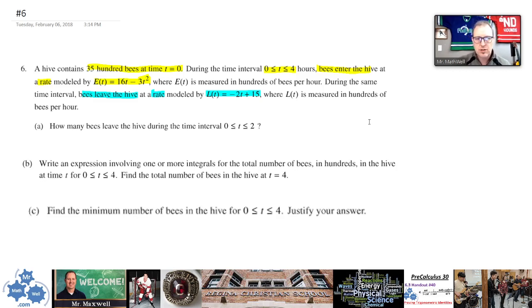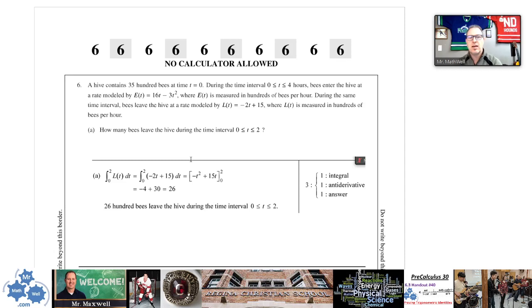Hopefully you've had a chance to give this question a try, and I did highlight some important things here at the beginning. The fact that we have 3,500 bees at the beginning, the time span is 0 to 4 hours. Bees enter the hive at this rate, so this is a rate, it's equivalent to a first derivative. Bees also leave the hive at this rate. Part A says how many bees leave the hive during the time interval from 0 to 2. So if we're talking about how many bees, that's an actual number of bees. So we take the rate and we integrate to get the actual number.